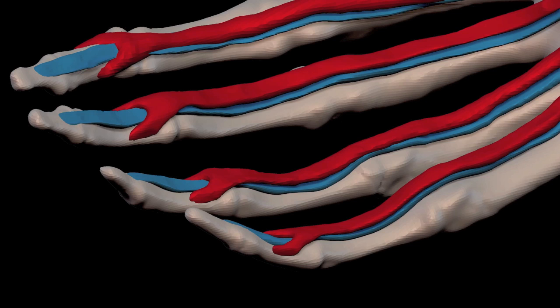First off, let's look at the deep digital flexor, the blue tendon. When the muscle is activated, it pulls the tendon, which is attached here, and it rotates the far bone around this joint, and it causes the distal bone to rotate up.